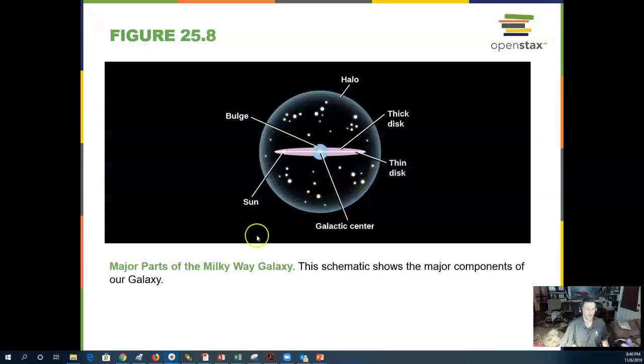Other parts of the galaxy include the galactic center, a bulge around the center, a thin disk, and halo, where the globular clusters reside.